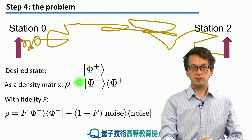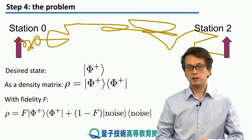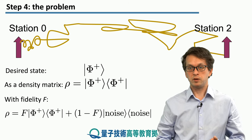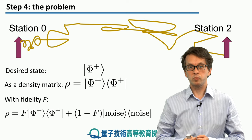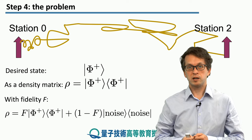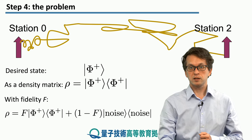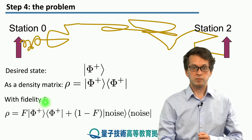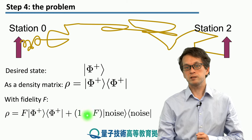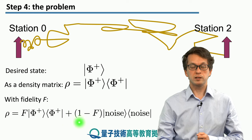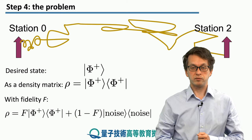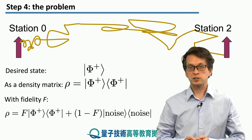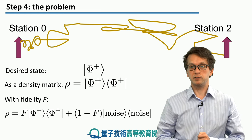In density matrix form, we can write phi plus as the outer product. But in reality there will always be some noise spoiling our operations. We will not end up with the pure state phi plus. In fact, with some probability given by the fidelity f we will have the state phi plus, and that will be mixed with some noise terms with probability given by 1 minus f. So the question now is: how can we detect it and how can we correct it?